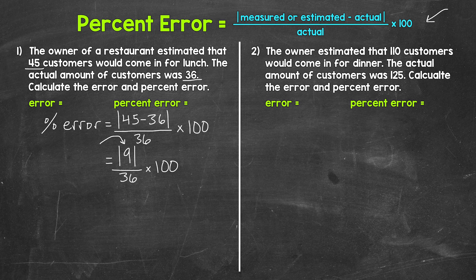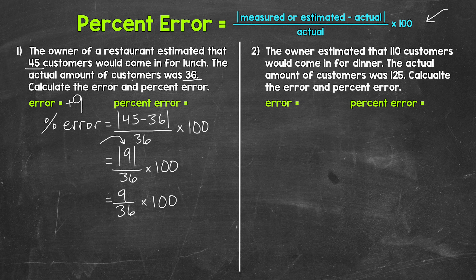On the other hand, a negative error indicates that the estimate was under. So the error for number one is positive 9, showing the estimate was over by 9. Now let's continue to work towards the percent error. We take the absolute value of 9, which is 9. So we have 9 divided by 36, times 100. Taking the absolute value of the error gives us the absolute error — that's 9 — over the actual value, 36. This ratio of the absolute error to the actual value is called the relative error.